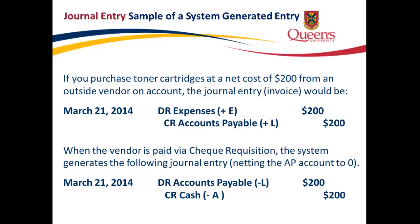Journal entry sample of a system-generated entry: if you purchase toner cartridges at a net cost of $200 from an outside vendor on account, the journal entry would be a debit to the expense account for $200 and a credit to accounts payable for $200. When the vendor is paid by check requisition, the system generates a journal entry netting the AP account to zero: a debit to accounts payable for $200 and a credit to the cash account for $200.